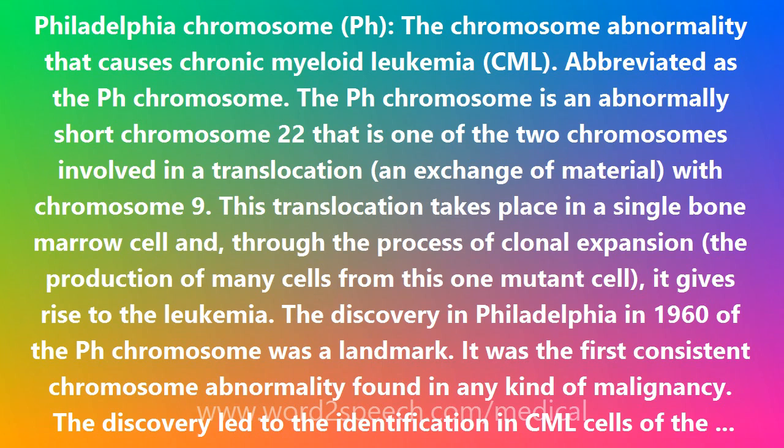The presence of this BCR-ABL protein in CML cells is strong evidence of its pathogenetic, disease-causing role. The efficacy in CML of a drug that inhibits the BCR-ABL tyrosine kinase has provided final proof that the BCR-ABL protein is the unique cause of CML. The Ph chromosome is also found in a form of acute lymphoblastic leukemia (ALL), likely due to the same chromosomal and molecular mechanisms.